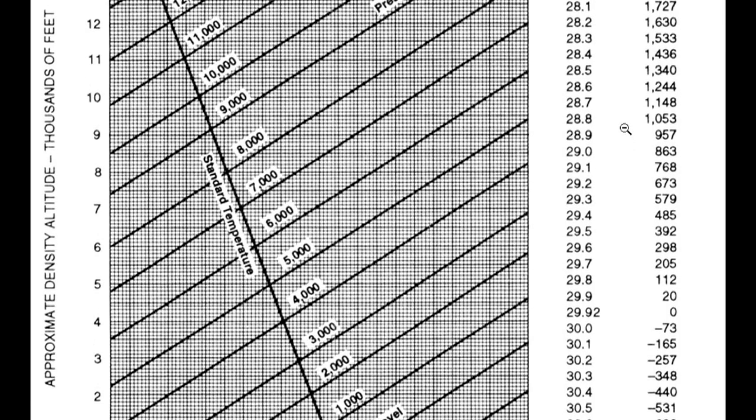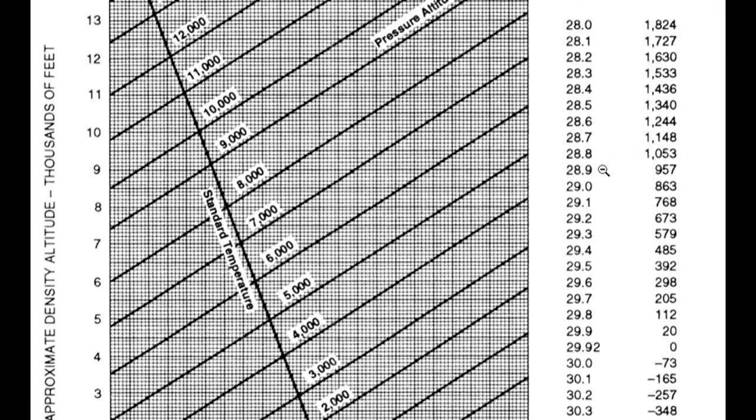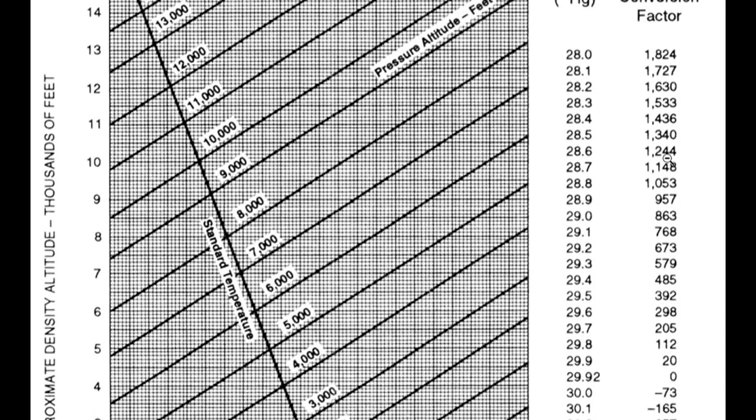So let's say our altimeter is 28.80. Okay, we need to come across to a pressure altitude of 1,053 feet. Do not forget to add your field elevation to this when we're calculating density altitude. Okay, so it would be 1,253.